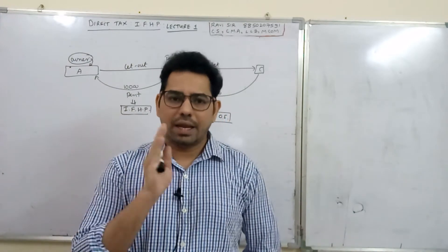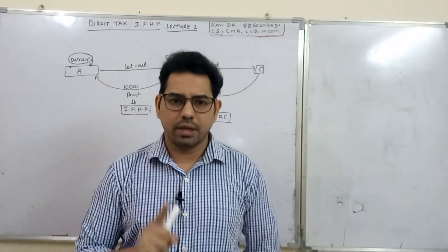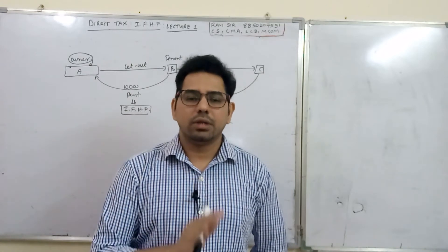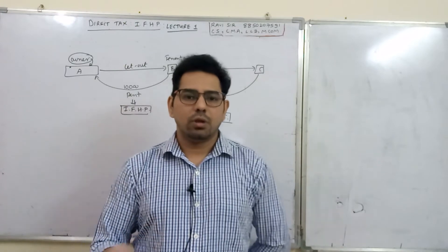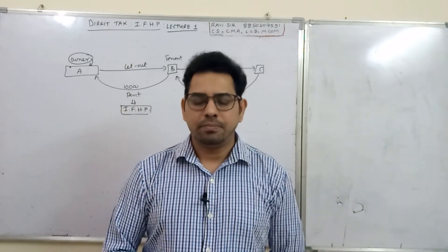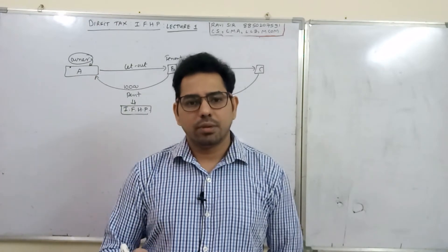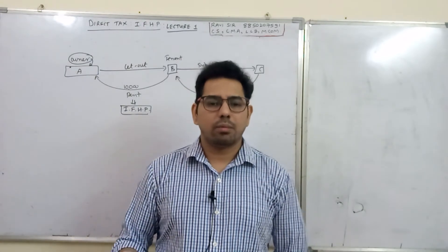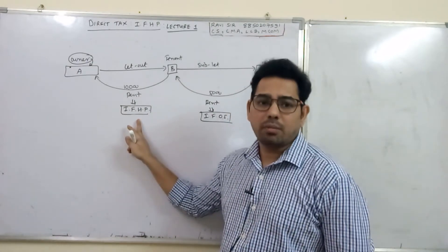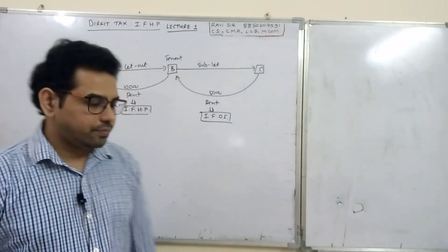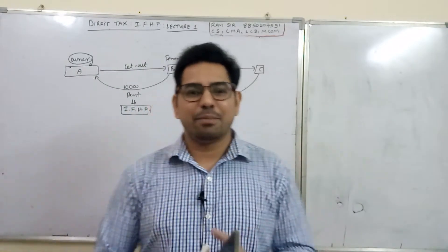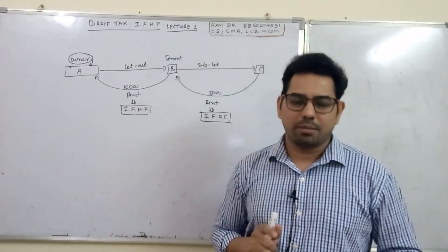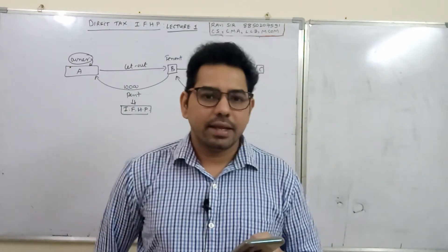So the difference is: if there is ownership, rental income goes to Income from House Property; if there is no ownership — like a tenant subletting — it goes to Income from Other Sources. The first condition in Section 22 is that ownership is very important. And going forward, full ownership is not necessarily required — even partial ownership counts. Normally when two people buy a house together, both are part-owners, and even then Income from House Property applies. So whether you are a full owner or part owner, your rental income comes under Income from House Property.